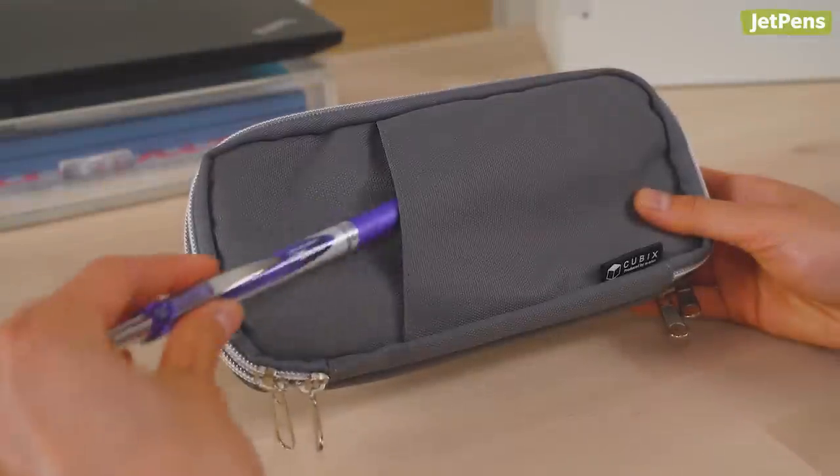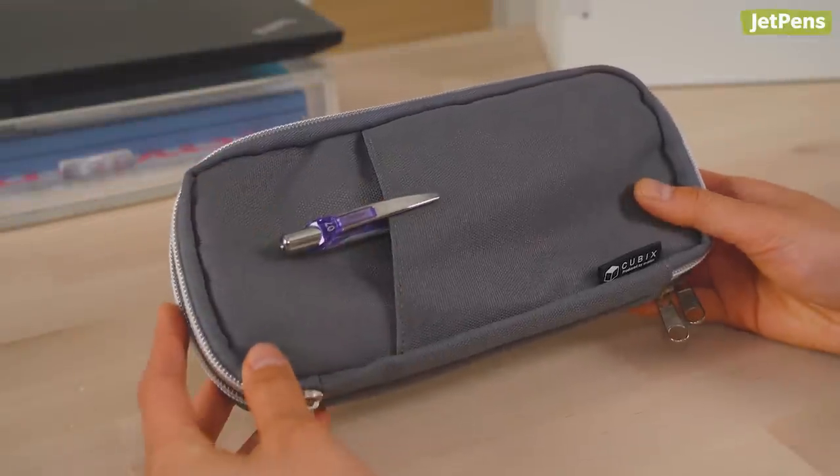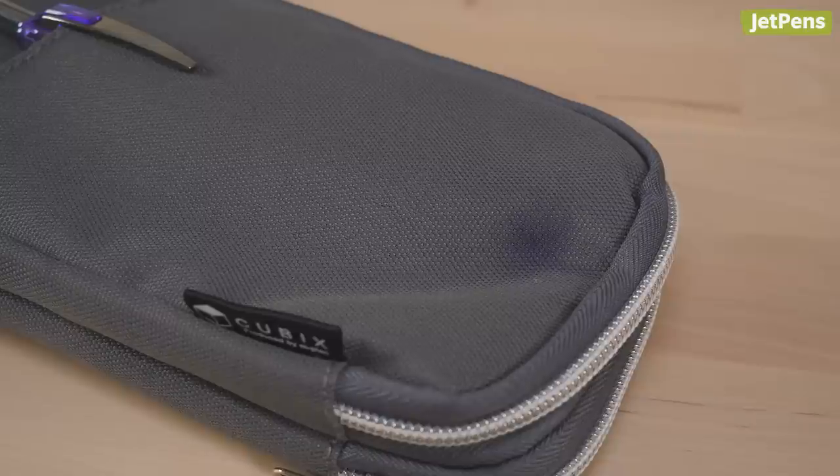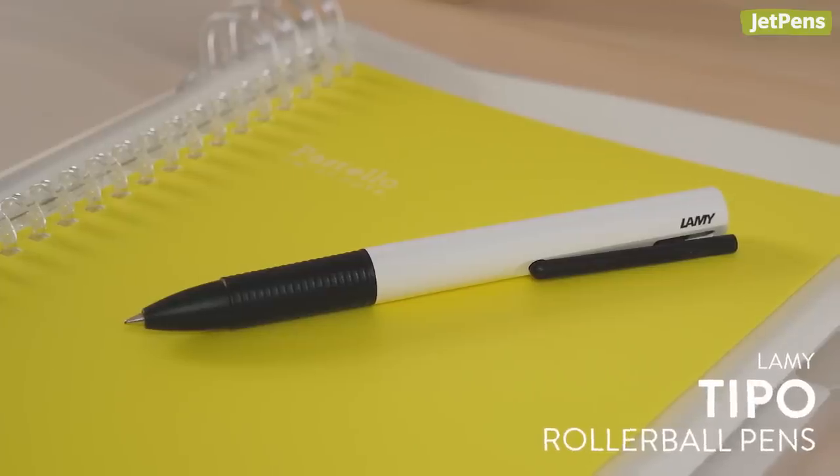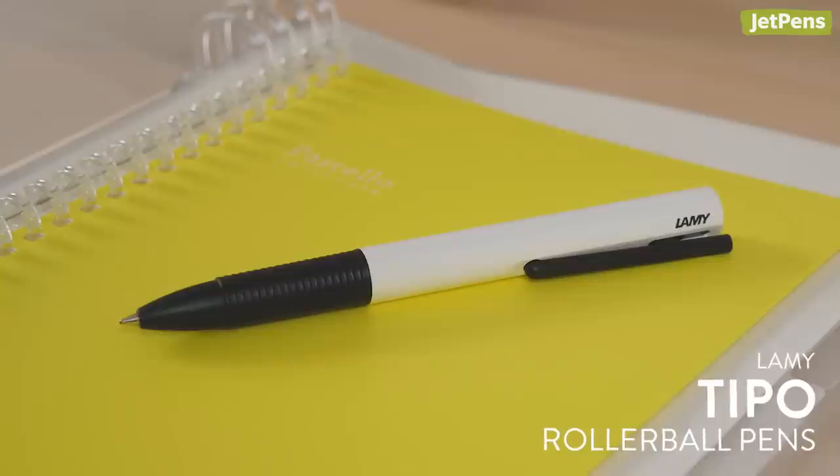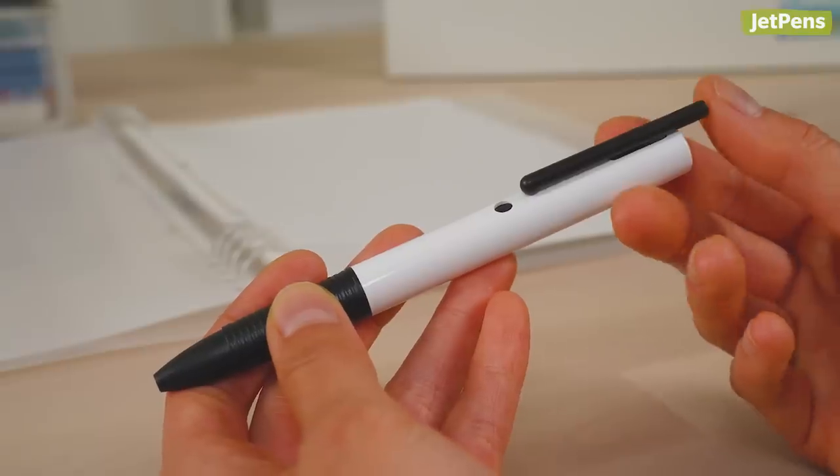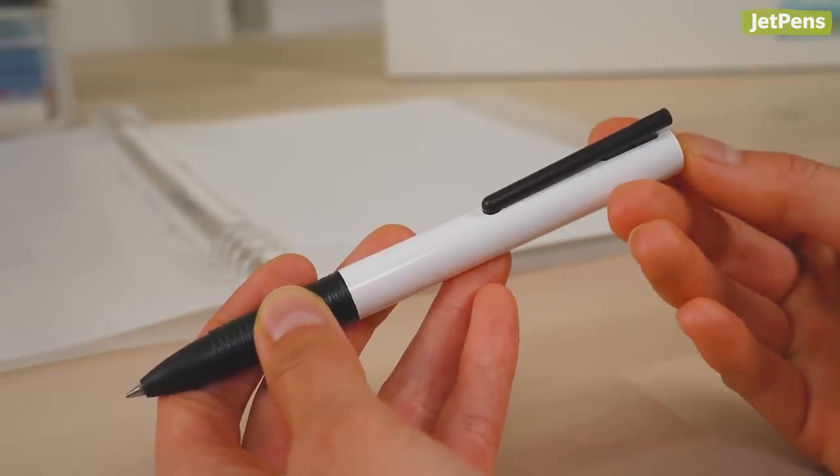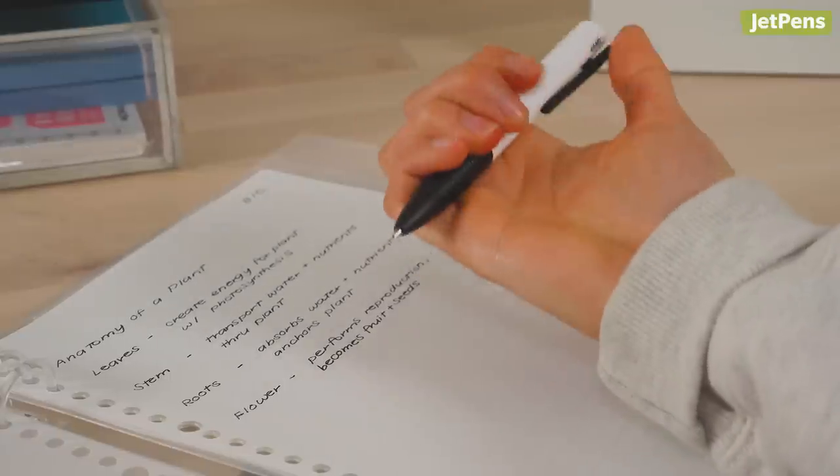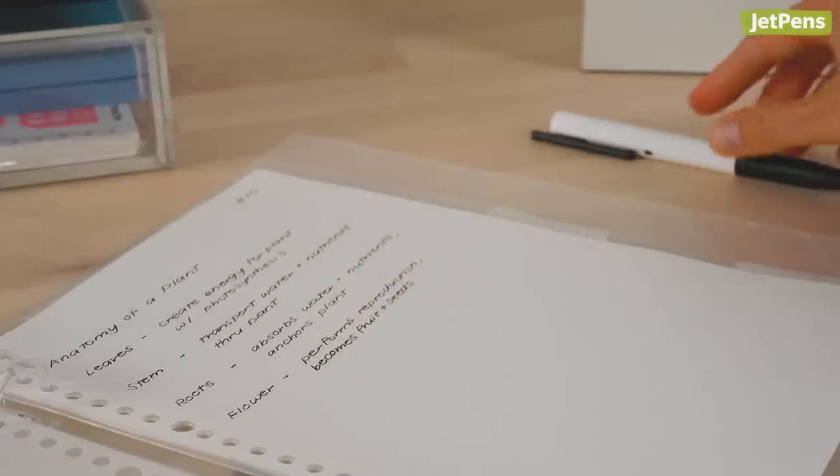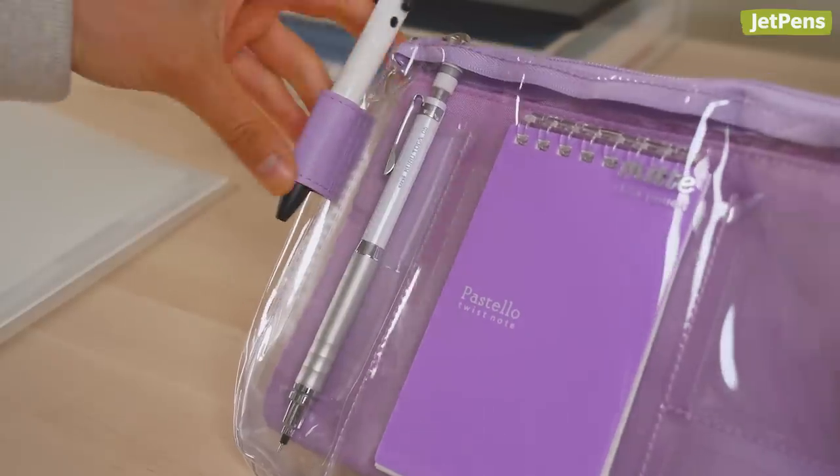When you clip your pen to your pocket or pen case, there's always a chance the tip might extend and cause ink stains on the fabric. The Lamy Tipo removes this annoyance with its special clip design. When the clip is pushed down, it hooks into a slot on the barrel, and the pen tip extends. Once the clip is unhooked so that it can be attached to a pocket or pen loop, the tip retracts automatically.